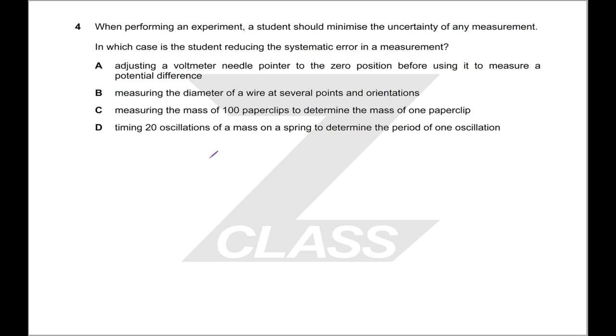When performing an experiment, a student should minimize the uncertainty. In which case is the student reducing systematic error in a measurement? So essentially the general principle here is if you are doing repetitions or something like that, there you are trying to account for and reduce random error. Whereas making some physical adjustment to your setup, that tends to be systematic error. So essentially all of these three are using multiple measurements. Generally speaking, if you're doing multiple measurements, you're trying to reduce random error. So it's the other one, adjusting your actual system that's reducing systematic error.